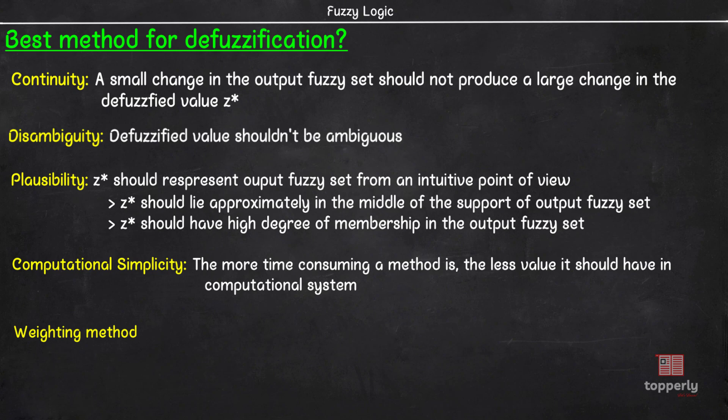For instance, in the weighted average method, the weights are the individual membership values, while in the center of sums, the weights are the areas of the respective membership functions. So while assessing which defuzzification method to use, you should consider all these 5 criteria and also consider the goodness or reliability of the answer in the context of the data available.